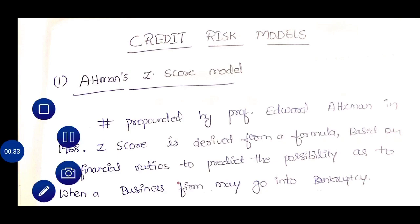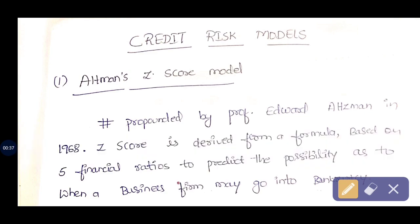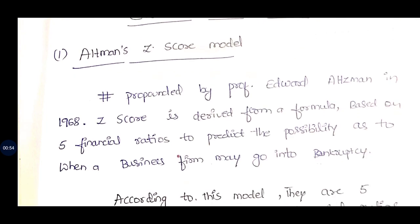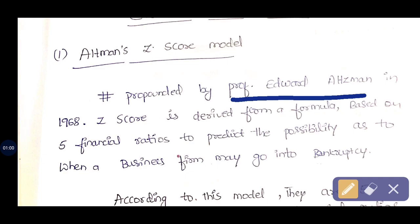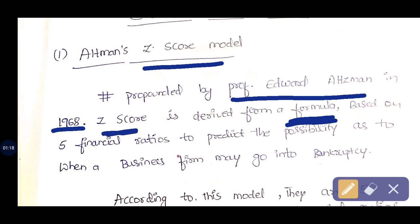The first model is the Altman Z-Score model, and this is a very important model with illustrations as well. This model was propounded or founded by Professor Edward Altman in the year 1968. This is called the Z-Score because the variable Z appears in the formula.